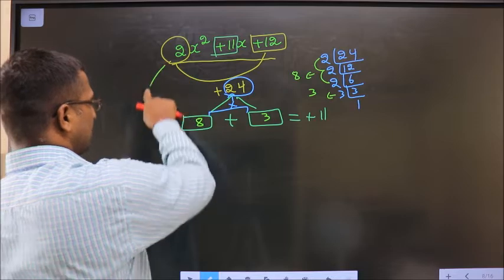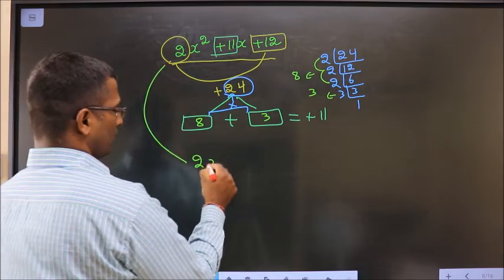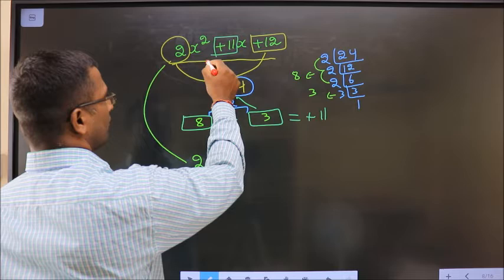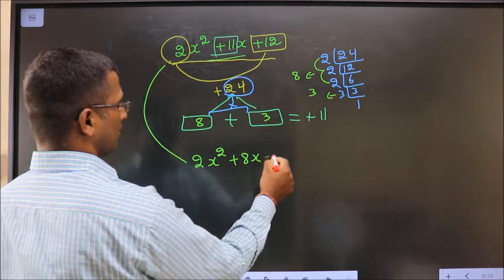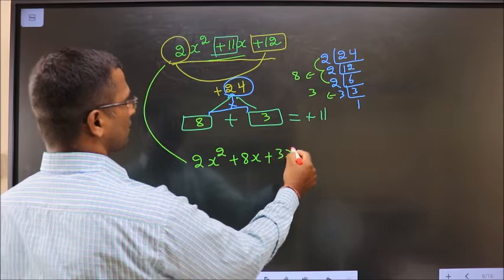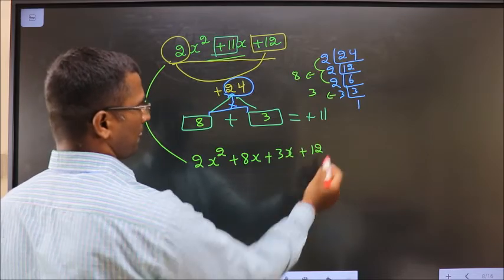Now this will change to 2x square. Instead of 11x, we write this time 8x plus 3x plus 12.